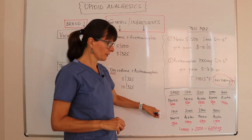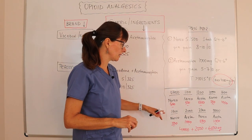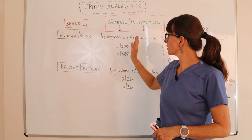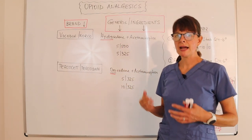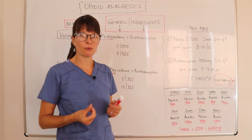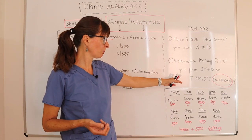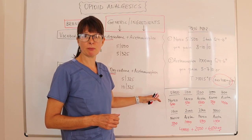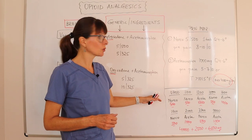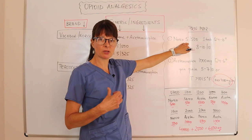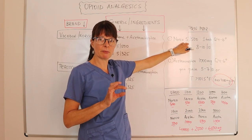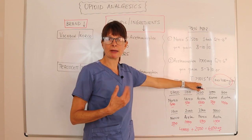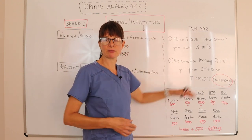This is a pretty extreme example — the time frame might be spaced out more in practice. But the key point is to be aware that these pain medications also contain acetaminophen. If the patient has additional acetaminophen ordered for lower-threshold pain or fever, you are at risk of overdosing the patient with acetaminophen, which can be hepatotoxic. Make sure you know the acetaminophen content of the Norco or Percocet so you can calculate the maximum daily dosage and avoid accidentally giving the patient too much Tylenol.